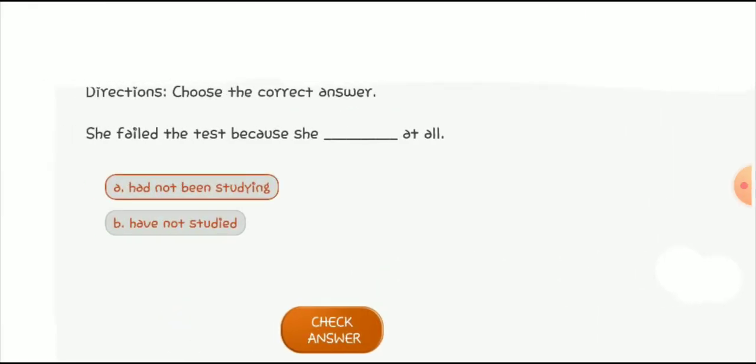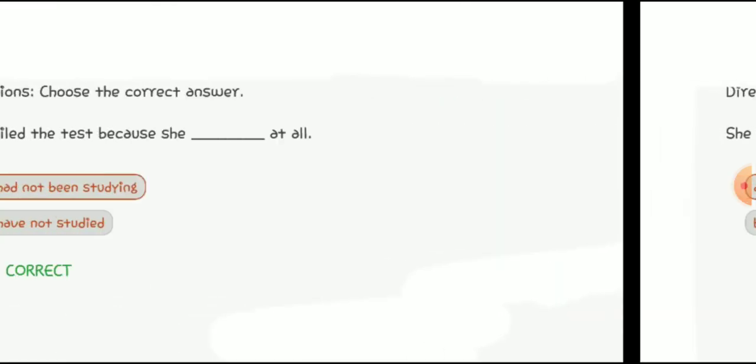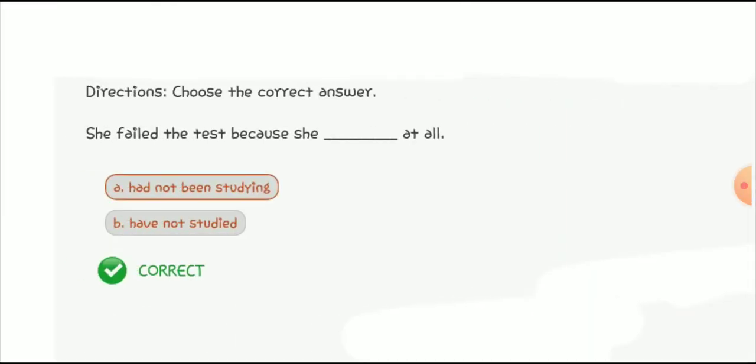Next quiz: 'She failed the test because she ___ at all.' The answer is 'she had not been studying at all.' So 'had not been studying' is the correct option according to the formula.